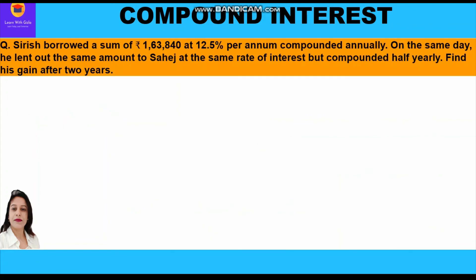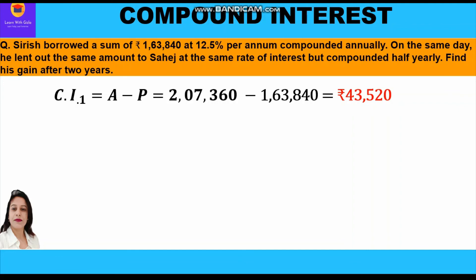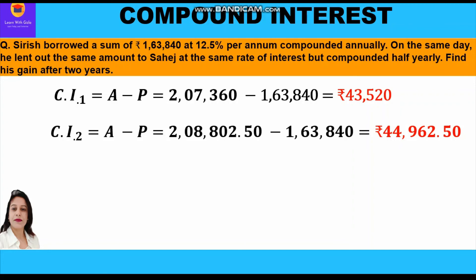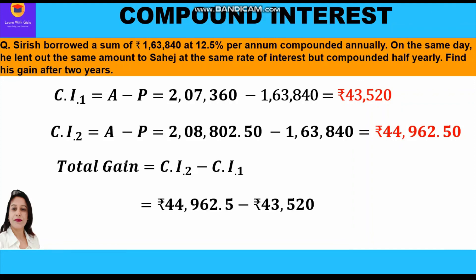Now let us compare both compound interests. In the first case (compounded annually), CI = rupees 43,520. In the second case (compounded half-yearly), CI = rupees 44,962.50. Clearly the compound interest in the second case is more, so Sirish has a gain. Gain = 44,962.50 − 43,520 = rupees 1,442.50. This is the total gain after two years because he borrowed at annual compounding but lent at half-yearly compounding.